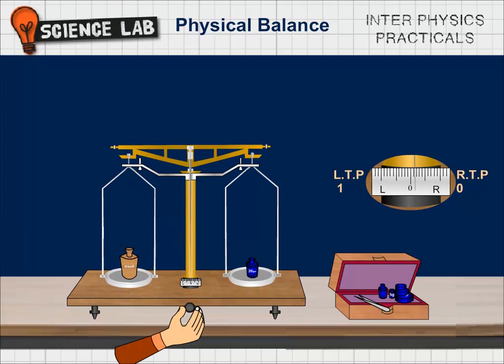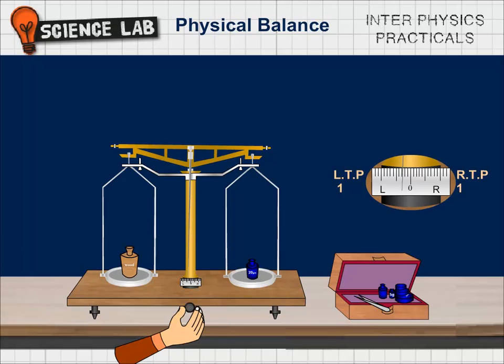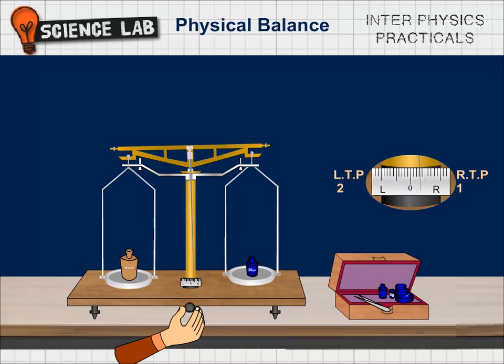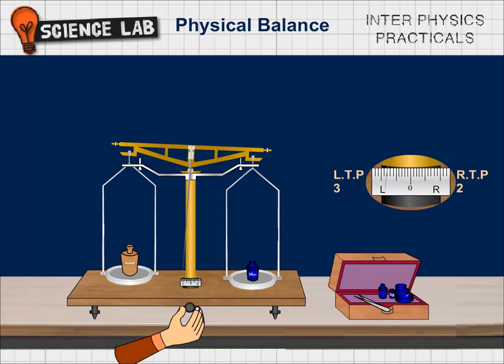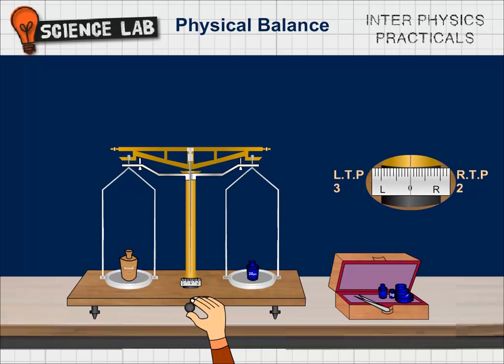Note down the three left turning points and two right turning points. Calculate the average of the left turning points and the average of right turning points and the mean of the averages. The mean obtained is known as resting point RP.